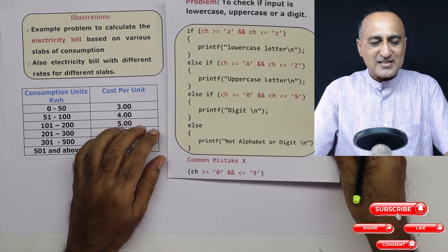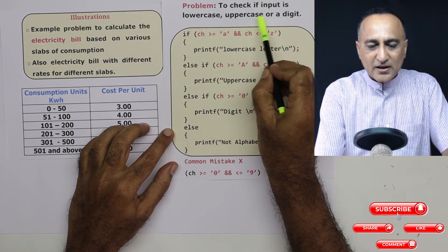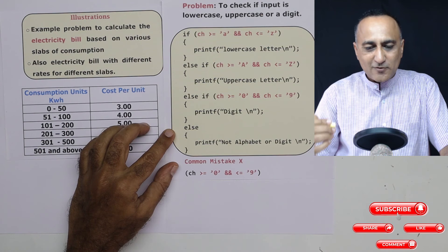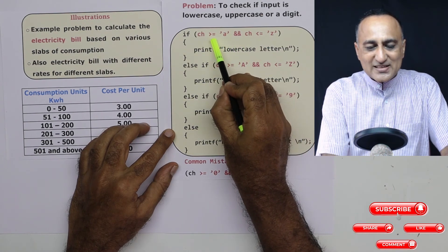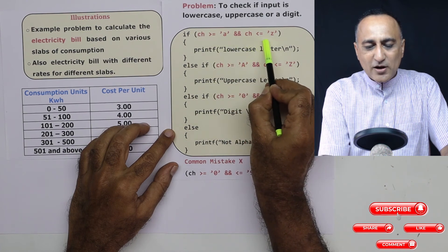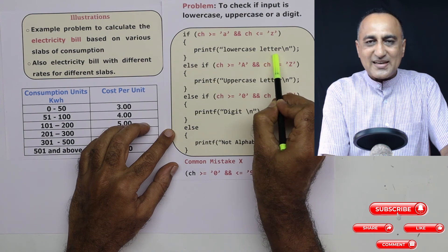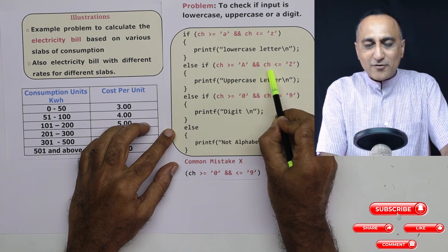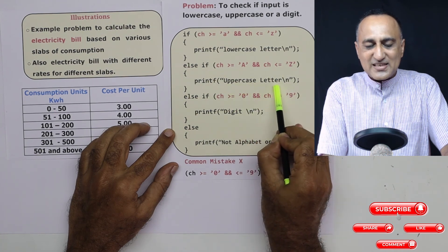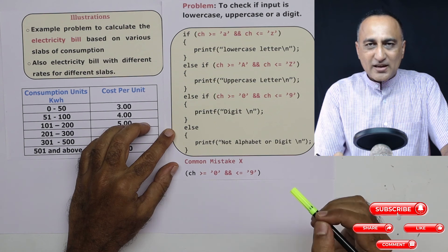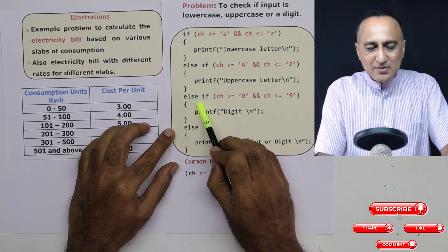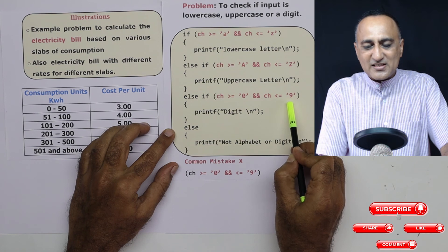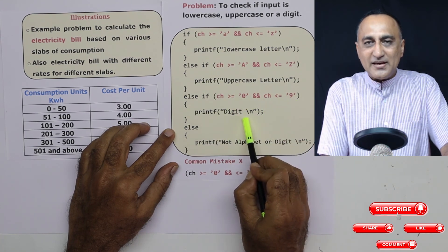Let me show one more example of a cascaded else-if statement: checking if an input character is lowercase, uppercase, or a digit, using ASCII values. If the ASCII value of the character is >= 'a' and <= 'z', print 'lowercase letter'. Else if the ASCII value is >= 'A' and <= 'Z', print 'uppercase letter'. Else if the ASCII value is >= '0' and <= '9', the input character is a digit.